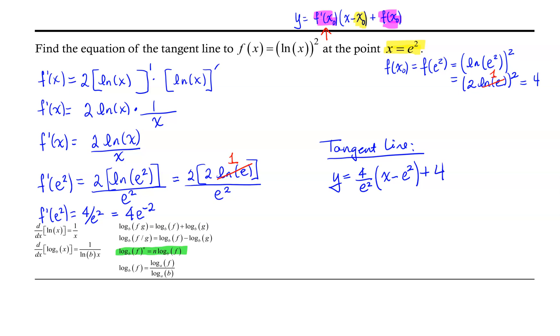Now that's a perfectly fine tangent line. We'll go ahead and leave it there. Of course, we could use the distributive property and distribute our slope through the (x - e²) if we desired. I hope this is helpful.